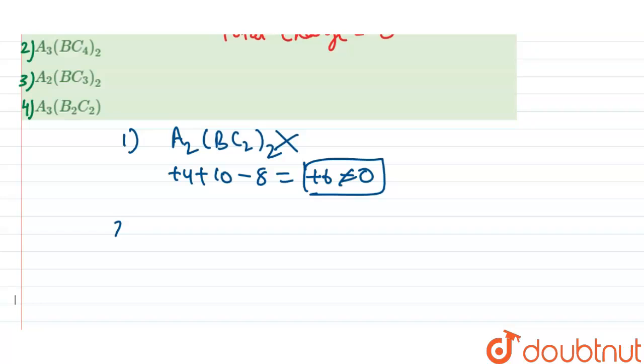Now in the second option, that is A3(BC4)2. Here A3, so 3 times 2 is 6 plus 6 and B is 2. So 5 times 2 is 10 plus 10 and C is 8. So 2 times 8 is 16, that is minus 16, which gives 10 plus 6, 16, 16 minus 16 is equal to 0. This gives equal to 0. Total charge on this is 0. So this is our correct answer.